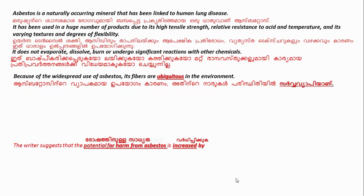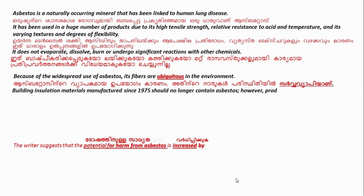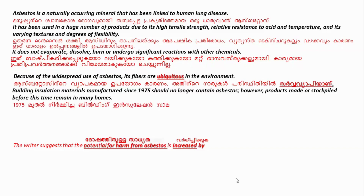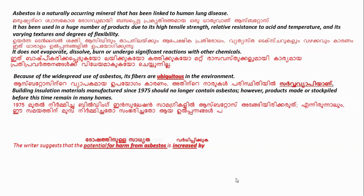Building insulation materials manufactured since 1975 should no longer contain asbestosis. However, products made or stockpiled before this time remain in many homes. So materials manufactured after 1975 should not have asbestosis per regulations, but products made before 1975 still remain in many homes.